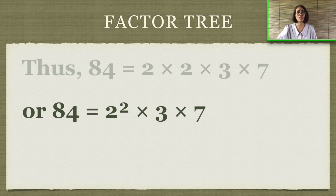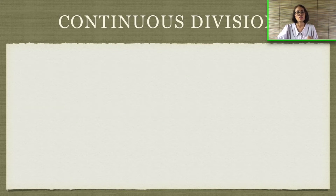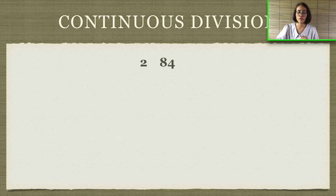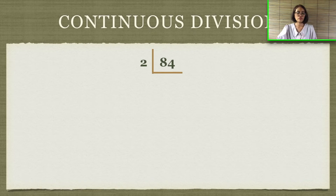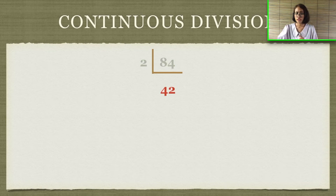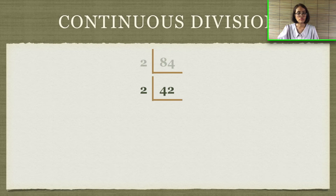We can use division — we call it continuous division. We write the number 84 on top and try to divide it by 2. The division symbol looks like an L. So 84 divided by 2 is 42. Then we divide 42 again: 42 divided by 2 equals 21.